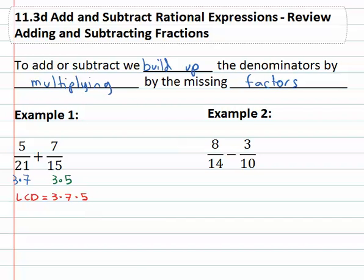We don't need to repeat the three, it's already there, which means we need to multiply each fraction by what's missing. Three and seven is missing the five, so we'll multiply by what's missing in the numerator and denominator. Five times five then is twenty five, over five times three times seven is one oh five.